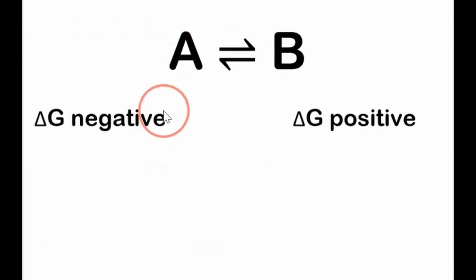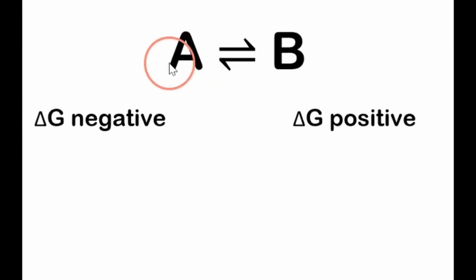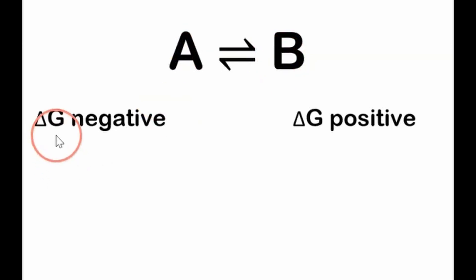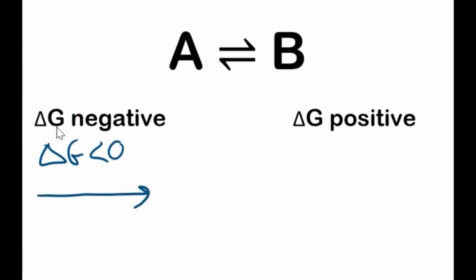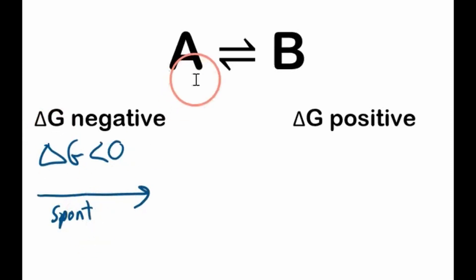Before we jump into the problems, I'd like to do just a very brief overview of the theory. We have some reactant in equilibrium with some product here. If the change in Gibbs free energy is less than zero, then it's spontaneous in the forward direction — to the right. So from A going to B, that's spontaneous.